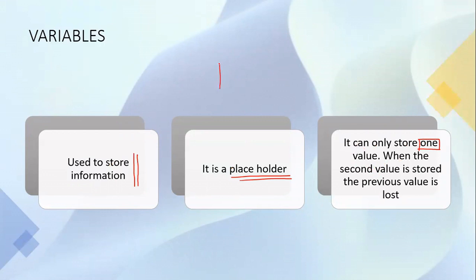Let's assume this is our placeholder. You generally give the placeholder a name, so the variable will have a name. For example, we'll call the variable num. We can then store a value into this placeholder — for example, we can store the value 10. That means that num has the value 10.